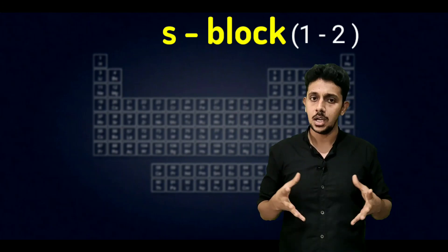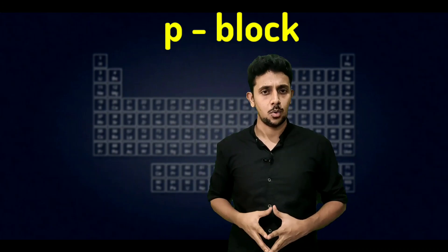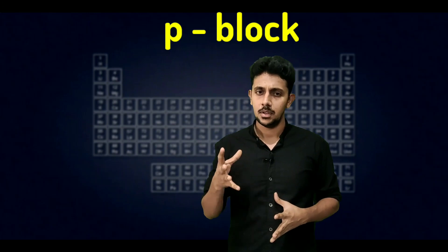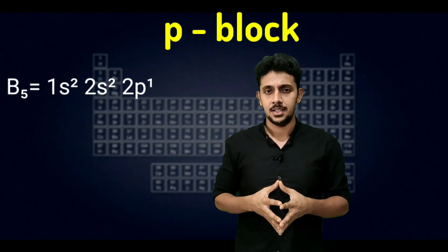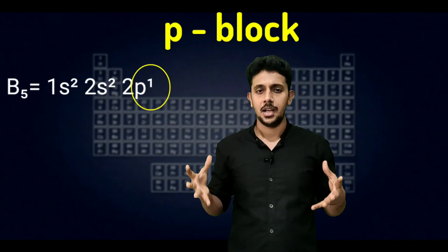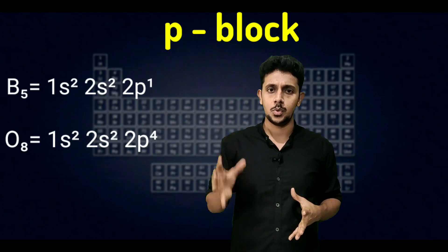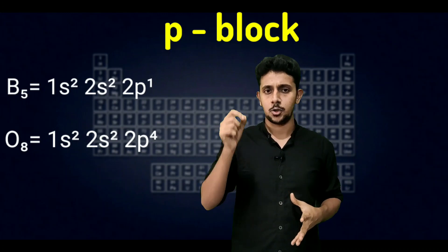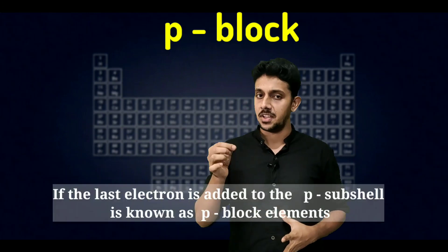The second block is p-block elements. If the last electron is added to the p sub-shell, they are known as p-block elements. For example, boron with atomic number five has configuration 1s2 2s2 2p1 — the last electron is added to the p sub-shell. Oxygen with atomic number eight has configuration 1s2 2s2 2p4 — the last electron is added to the p sub-shell, so it is a p-block element.